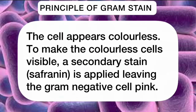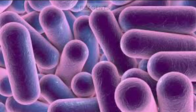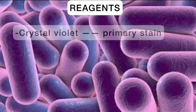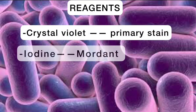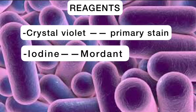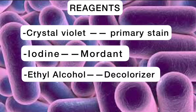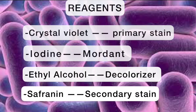The following reagents are used in carrying out the gram stain procedure: crystal violet, which is used as the primary stain; iodine, which functions as the mordant; ethyl alcohol, which functions as the decolorizer; and safranin, which is used as the secondary stain.